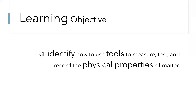Today's learning objective is: I will identify how to use tools to measure, test, and record the physical properties of matter. Notice the bullet point words — the ones that are bigger — identify, tools, and physical properties. Those are really important words to recognize while we are doing our lesson.